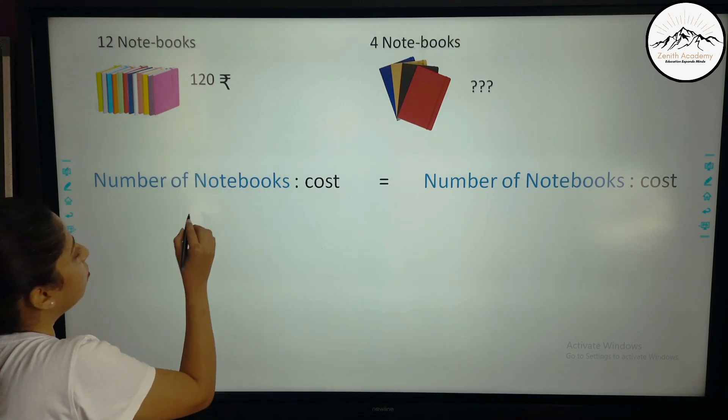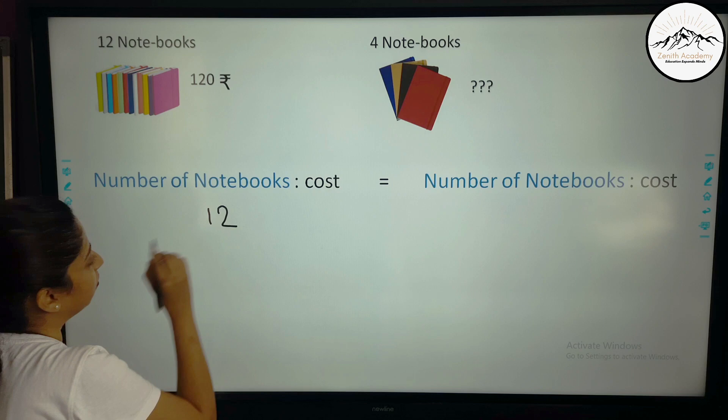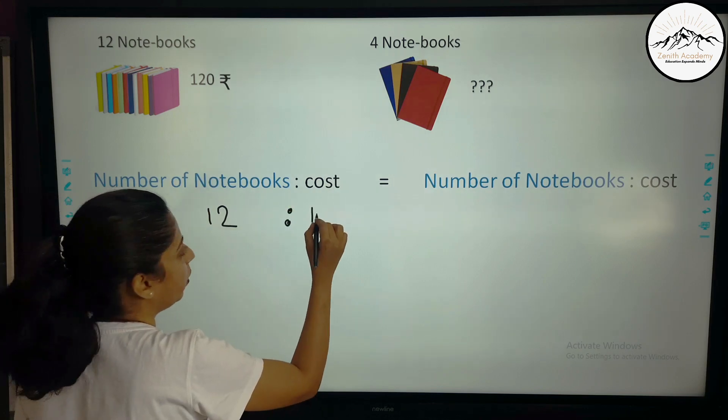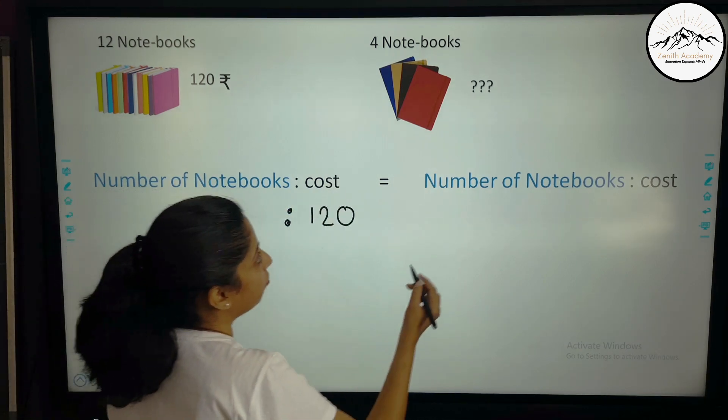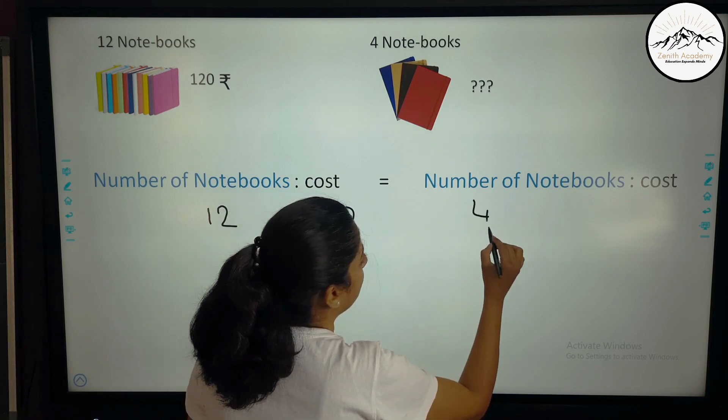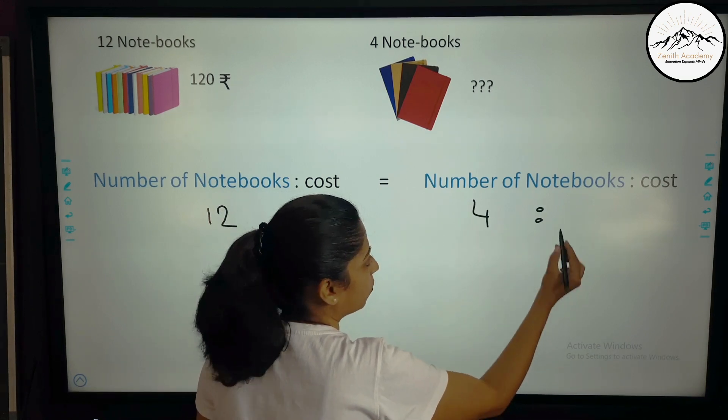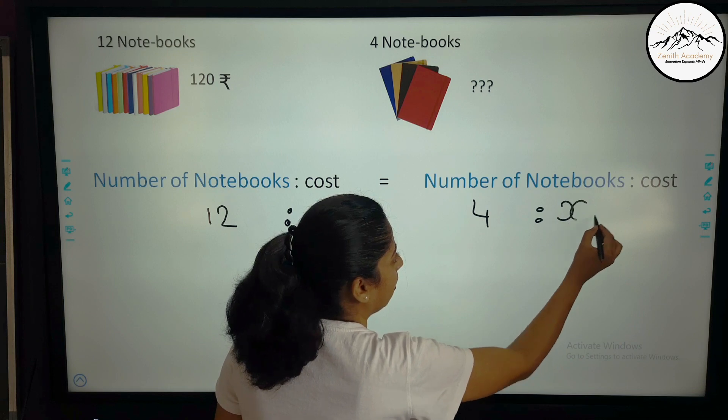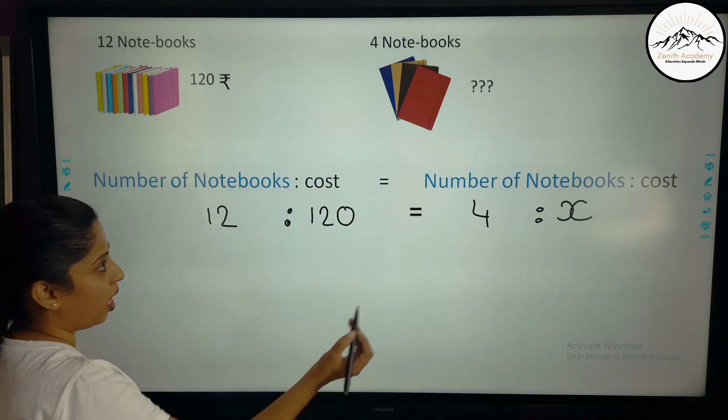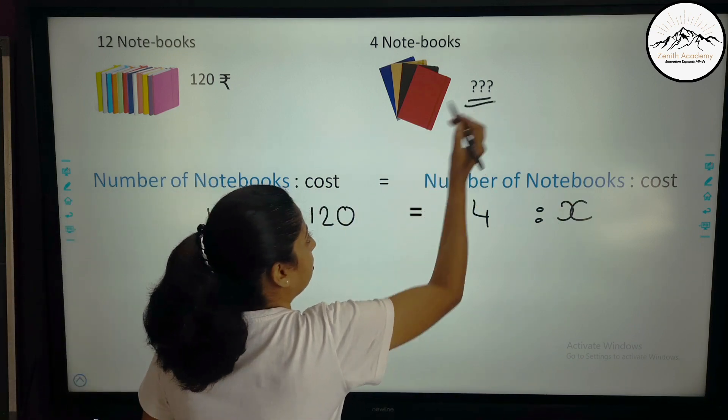So now here the number of notebooks is 12. And the cost is 120 rupees. Here the number of notebooks is 4. And cost I don't know. So I can take x. I have to find this.